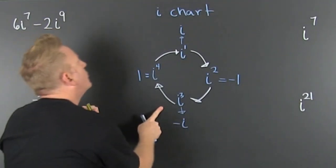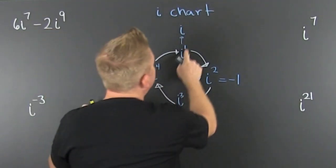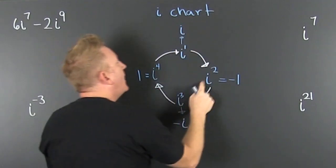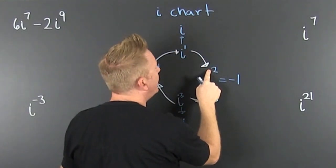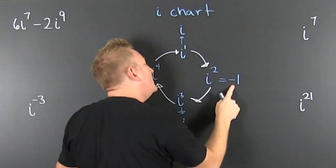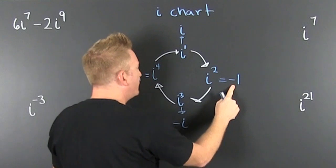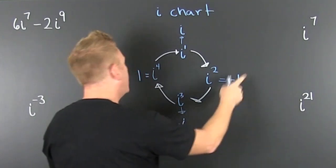I have an i chart. Oh boy. i to the first — that's i. i squared evaluates to minus one.